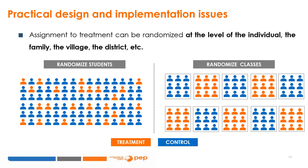Once the study is set up, it is time to tackle practical design and implementation issues. One of the most important is the level at which the treatment is randomised. The assignment can be randomised at the level of the individual, the family, the village, or the district. For example, students in an educational intervention can be randomised at the individual level or at the class level.